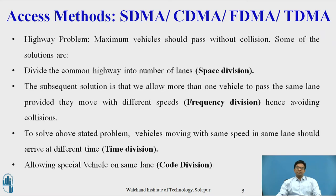Before going to the schemes, let us see one analogy to wireless communication — the highway problem. The goal of this highway problem is that from a highway, the maximum number of vehicles should pass without any collision. So collision should be less and utilization should be maximum.